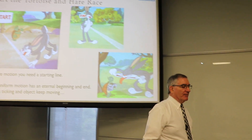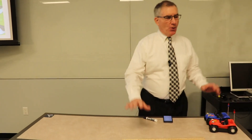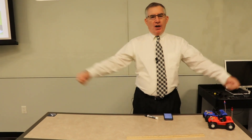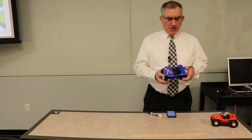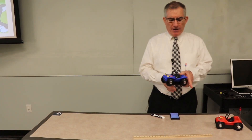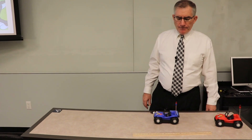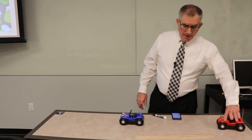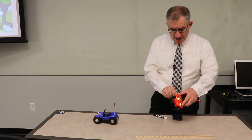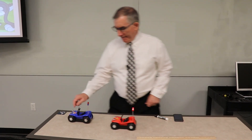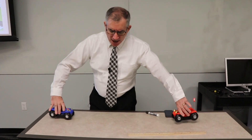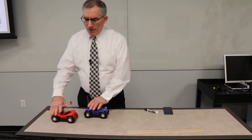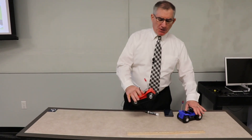Over on the table over here, if you were doing this on campus in lab, you would go out in the hallway and I give you a long tape measure. This is the tortoise car right here. And this is the hare car. If I turn them around, they will cross at some particular point.